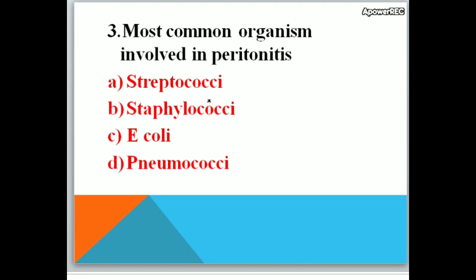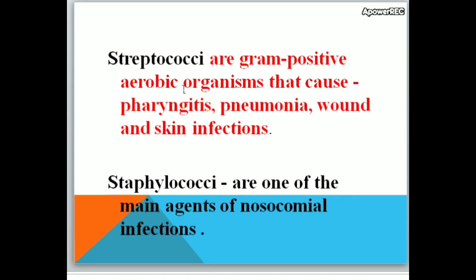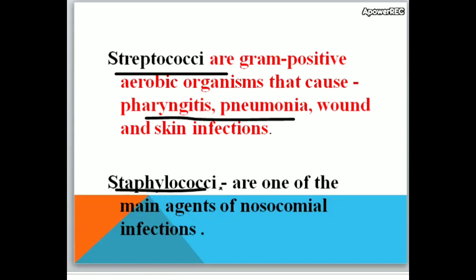Most common organism involved in peritonitis — A. streptococci, B. staphylococci, C. E. coli, D. pneumococci. Correct answer is E. coli. Streptococci are gram-positive aerobic organisms that cause pharyngitis, pneumonia, wound and skin infections. Staphylococci are one of the main agents of nosocomial infections. Nosocomial infection is an infection spread from the hospital.